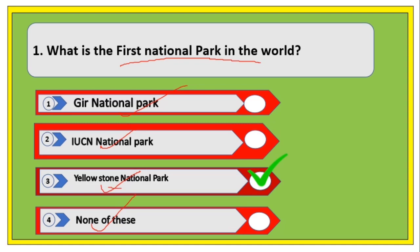About India — Jim Corbett National Park is the first national park in India. It was established in the year 1936 and is also known as Hailey National Park. Now, if the question comes: what is the largest national park?